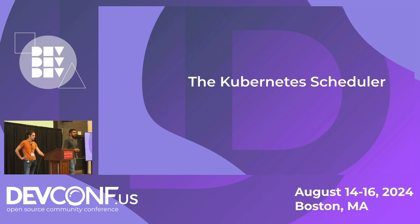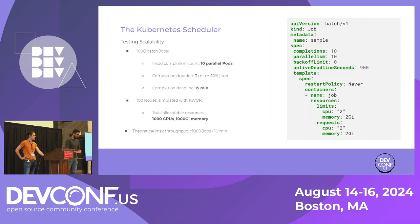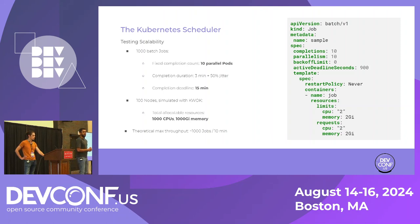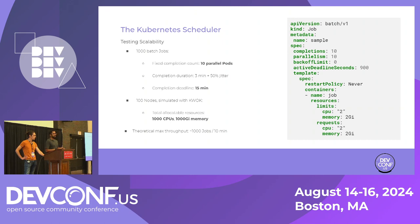We ran benchmarks with the Kubernetes scheduler — just the default thing running on your cluster. We used something called KWOK, which is Kubernetes without kubelet. It's a great way to simulate actual Kubernetes clusters just on your laptop without paying a lot. For the scale test, we took 1,000 batch jobs, each with a parallelism factor of 10 pods. The completion deadline is 15 minutes, and they should take about three minutes to complete if successful. The simulated cluster has 100 nodes with 1,000 gigs of memory and 1,000 CPUs. Theoretically, it should take about 10 minutes to finish all 1,000 jobs.